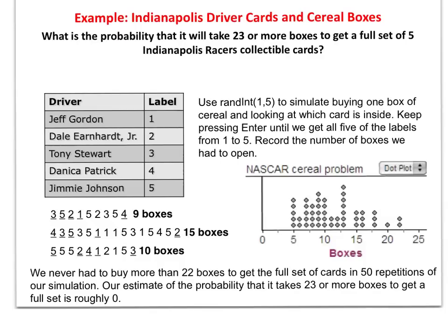Here's another example. This is real common when you buy the cereals that have little prizes in them, or you go to McDonald's and they're offering prizes in their Happy Meals, and you want to get one of every prize that they offer. How many boxes of cereal or how many Happy Meals do you have to buy to get one of every one? So this is a simulation. We're not going to go out and buy a whole bunch of Happy Meals or cereals to do this. We're going to simulate this. Here's a situation where there's Indianapolis collectible cards put in boxes of cereal. And there's five different cards. Those are the five drivers there from Jeff Gordon down to Danica Patrick and Jimmy Johnson.